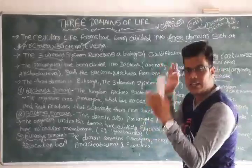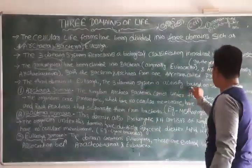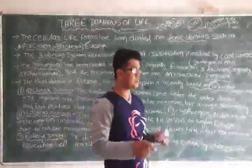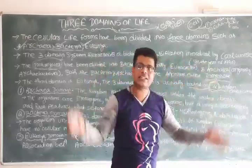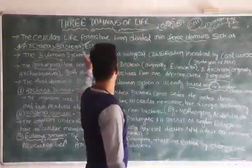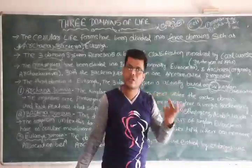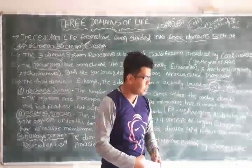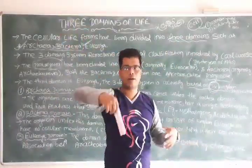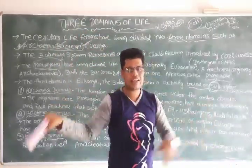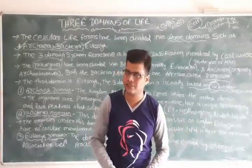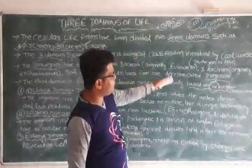The three domains are divided into six kingdoms. Just as India is a country with many states, and states have districts, the domains are the main area. Under the three domains — Archaea, Bacteria, and Eukaryotes — there will be six kingdoms. A kingdom is like a state under a country.